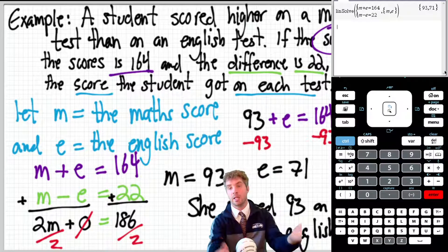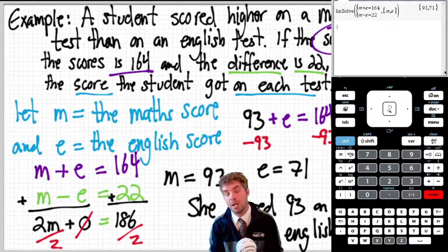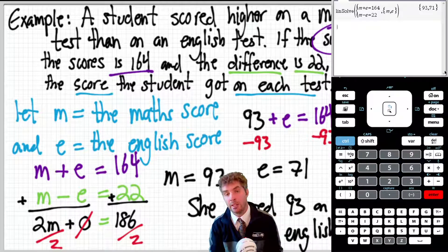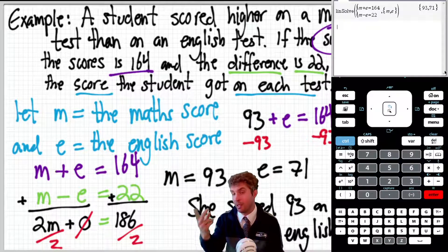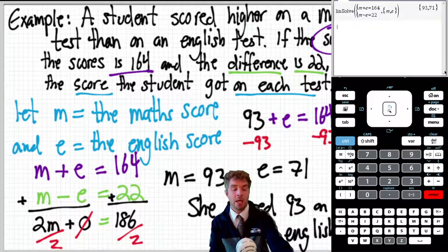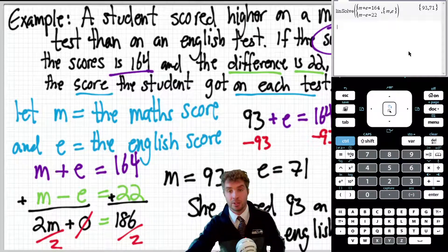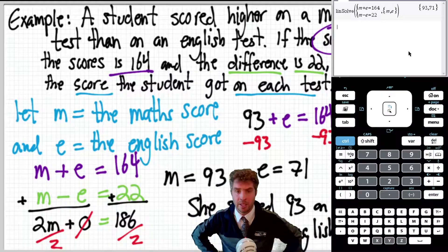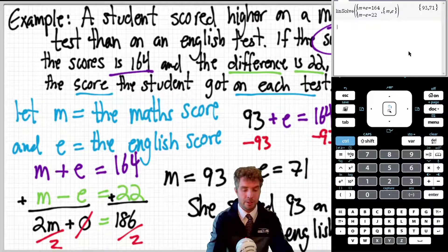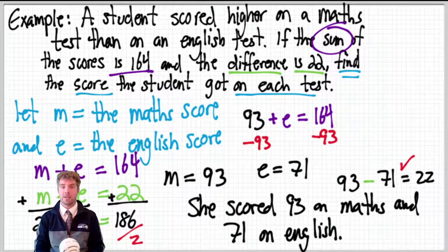And, that's literally it. I hit enter and it gives me 93 and 71 and I need to interpret those, make sure I get them, don't mix them up. I know the 93 is maths, so 71 is English. So I need to write out that sentence just like I did. It's behind my back now and behind the calculator. Let's have a look at it. She scored 93 on maths and 71 on English.